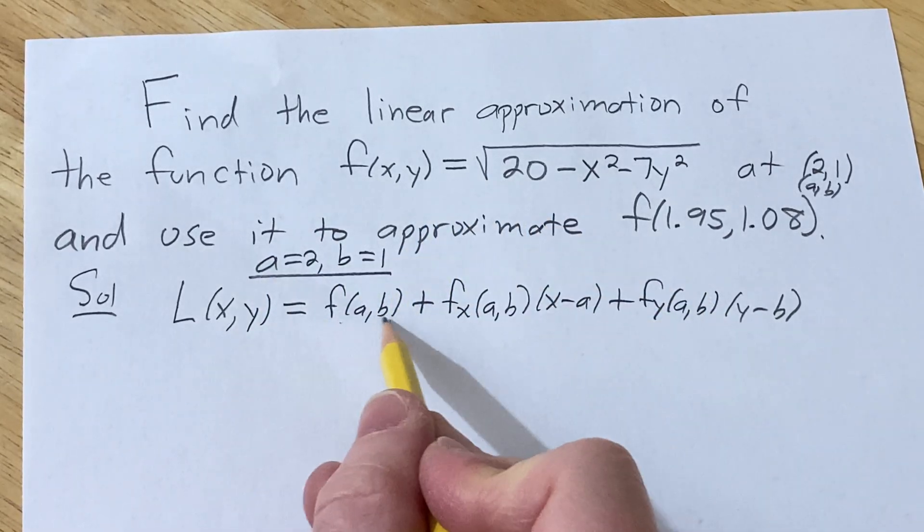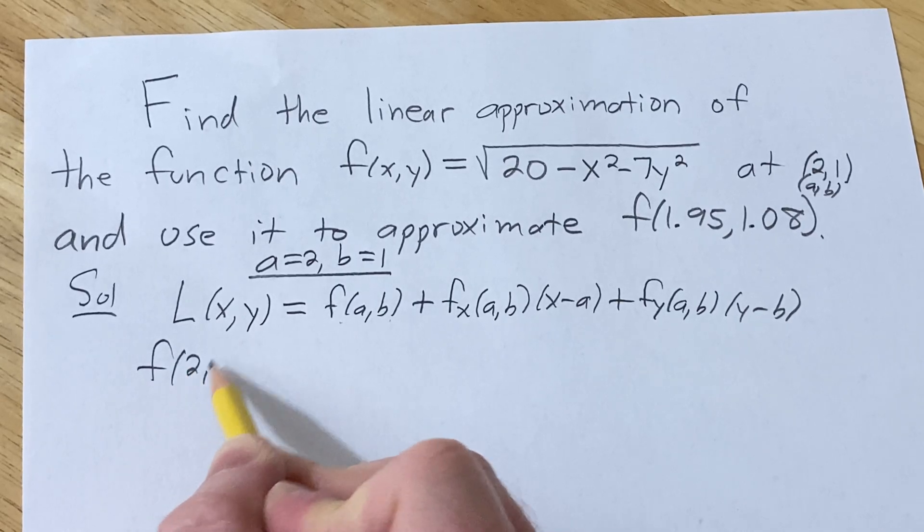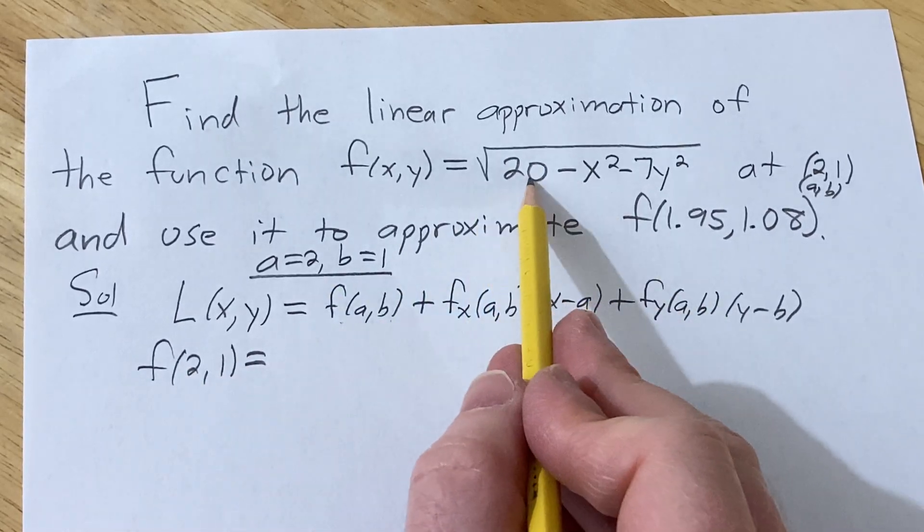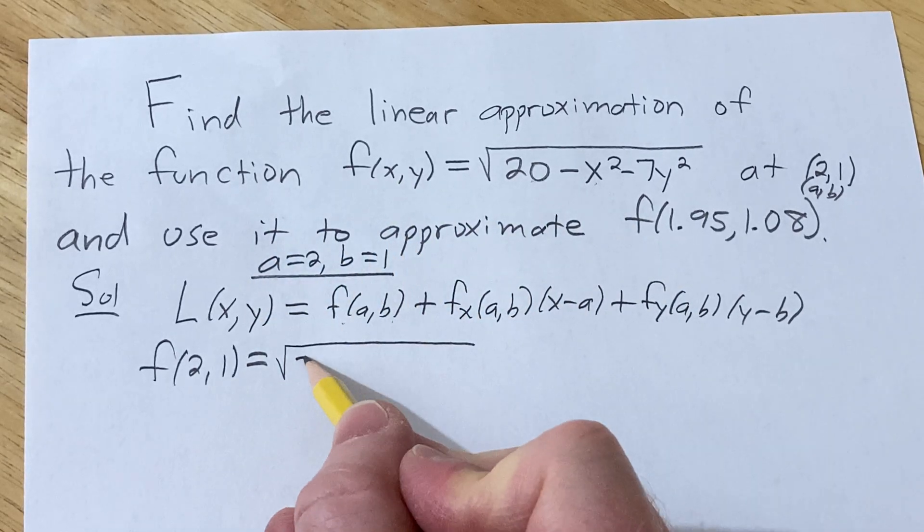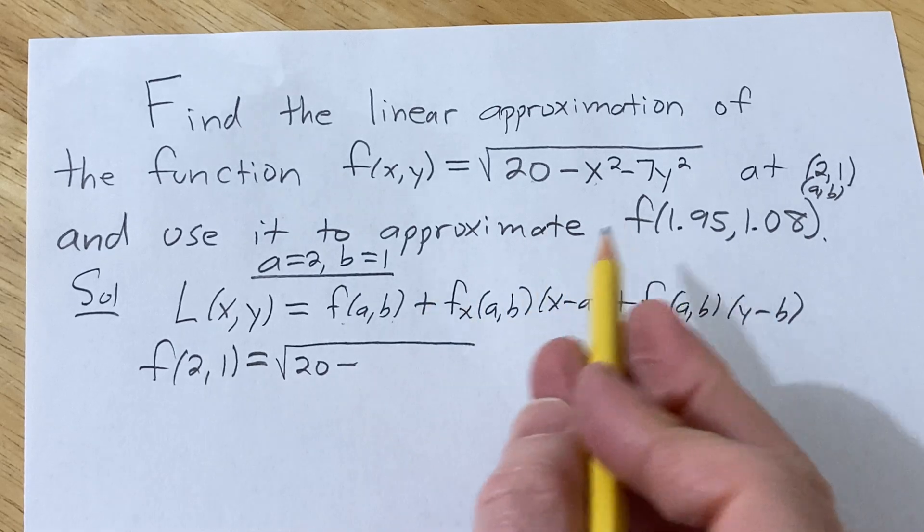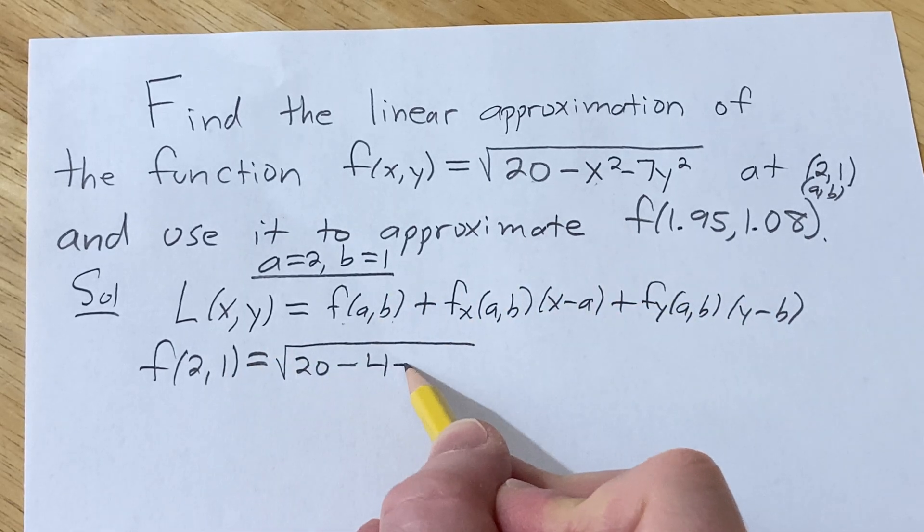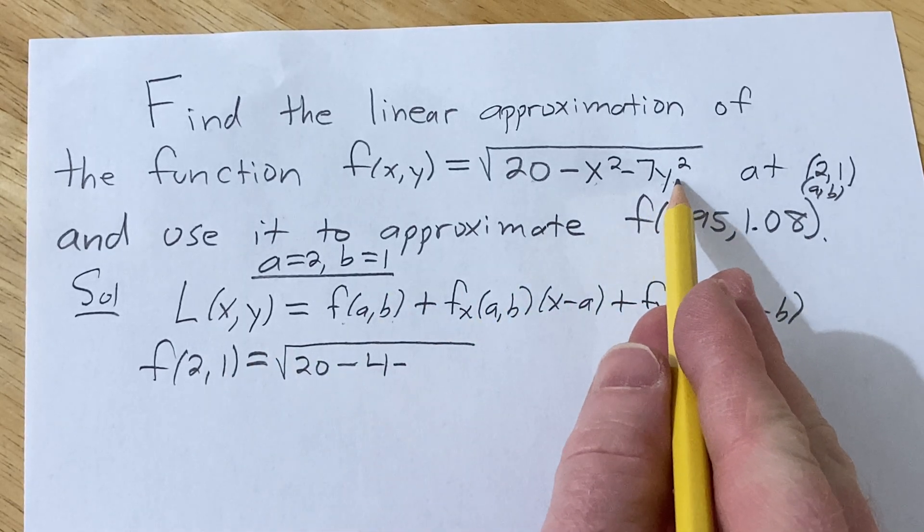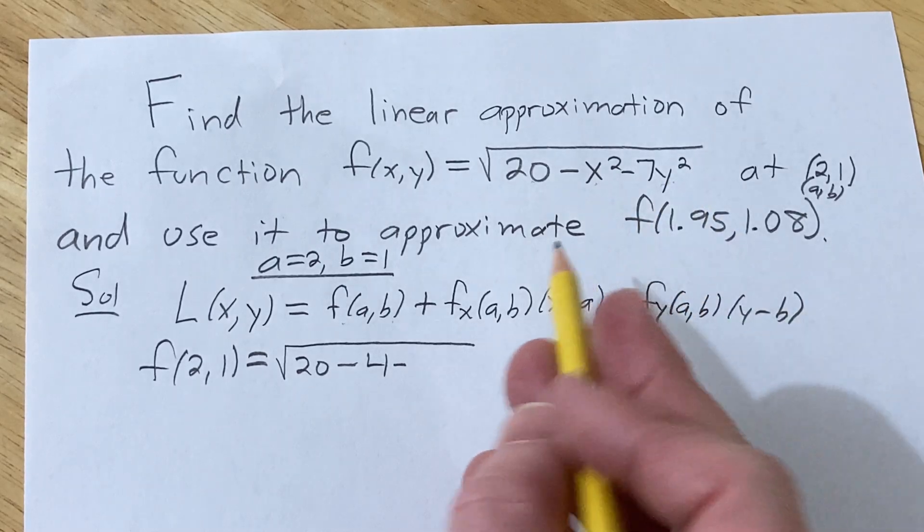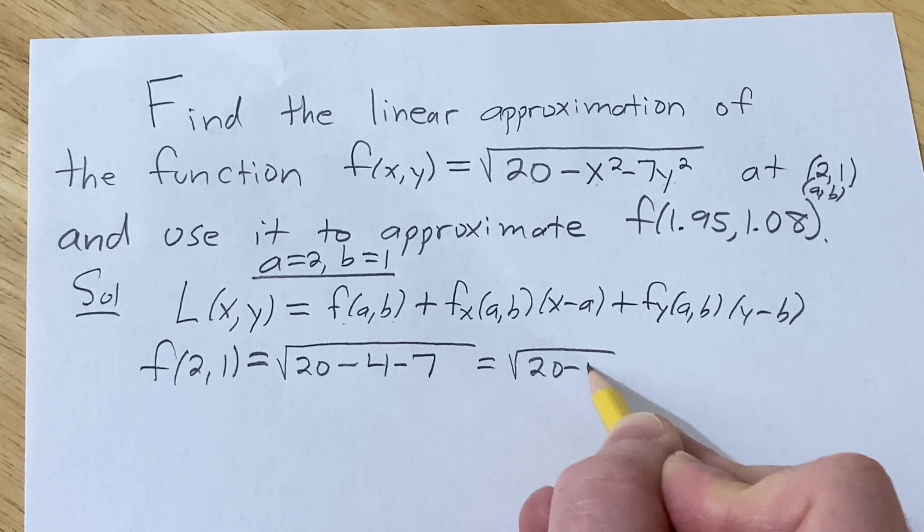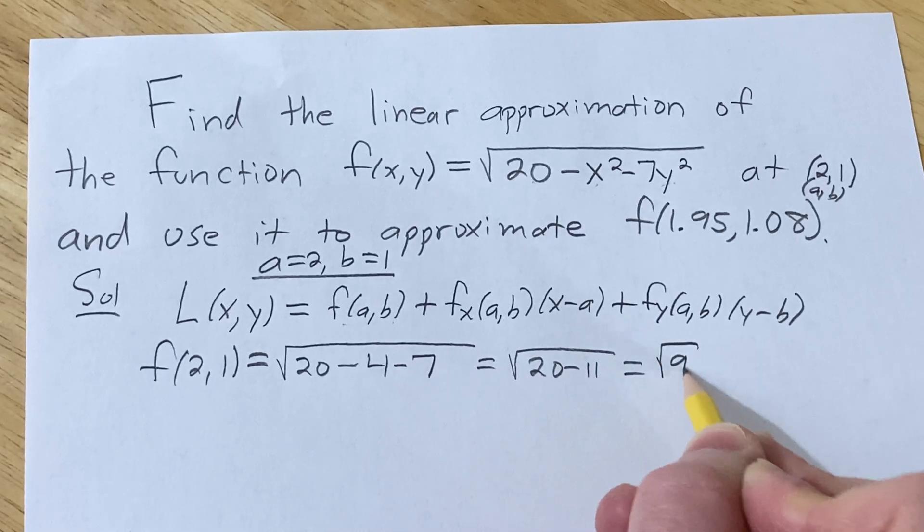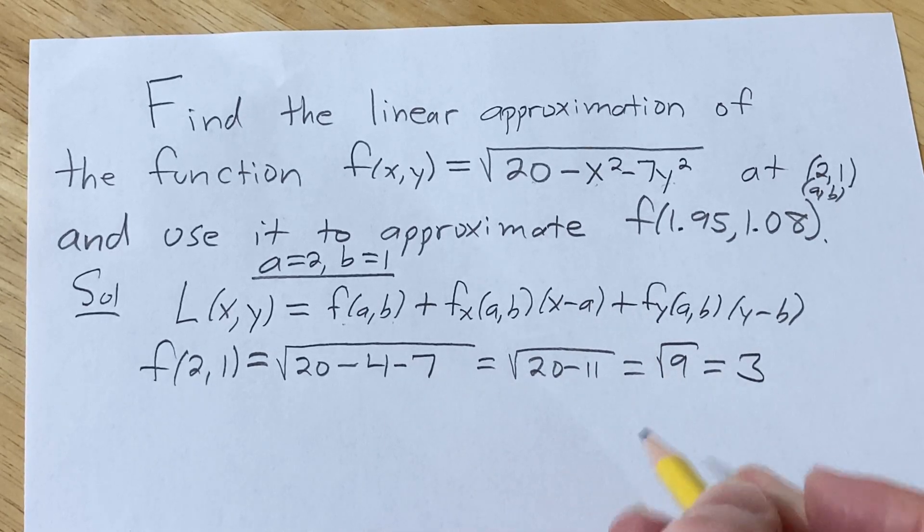Let's go ahead and find f of a,b first. So f(2,1), we're just plugging them directly into the function. So it'll be the square root of 20 minus x squared, so 2 squared is 4, minus 7y squared. 1 squared is 1, so it's just minus 7. This is 20 minus 11, so this is the square root of 9, which is 3. Good stuff.